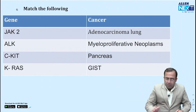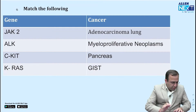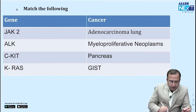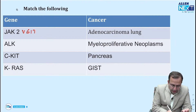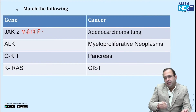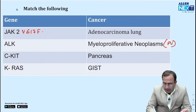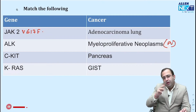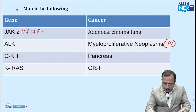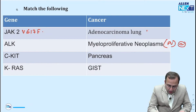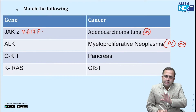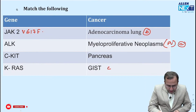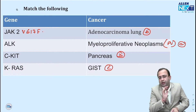Let us start with our pathology recall. Starting with the first question — match the following. JAK2 V617F mutation is seen in PV — polycythemia vera — and also ET, PMF. Most commonly seen in PV. ALK mutations are associated with adenocarcinoma lung; most common with adenocarcinoma lung is EGFR. ALK is adenocarcinoma lung. KRAS versus KRAS is pancreatic neoplasms.